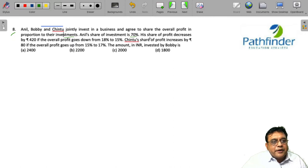Anil's share of investment is 70%. His share of profit decreases by 420 if the overall profit goes down from 18 to 15%. Since no mention of sales figure is there, we can assume that overall profit goes down from 18 to 15% of investment.